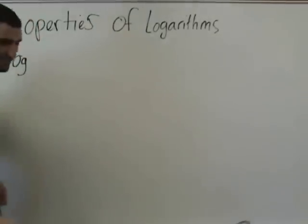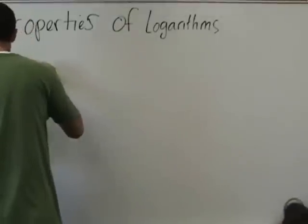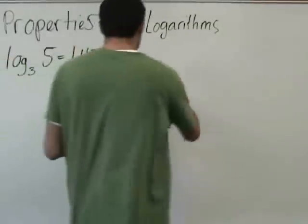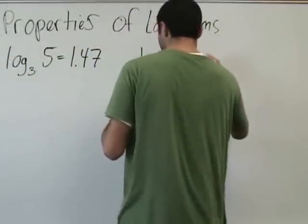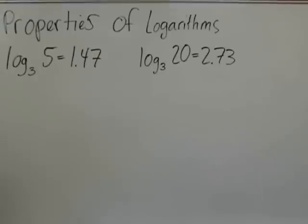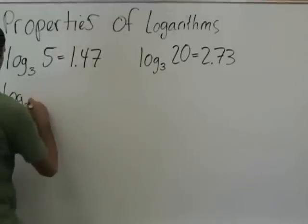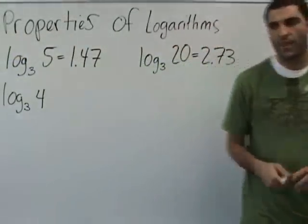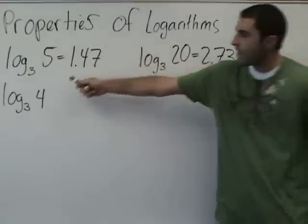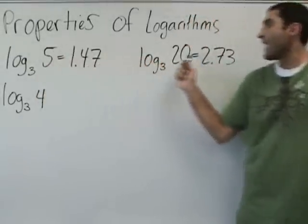So, given information. Come on, you guys keep it together. Here's given information: log base 3 of 5 is 1.47, log base 3 of 20 is 2.73. And now, the problem given to us is solve without using the calculator. Solve log base 3 of 4.